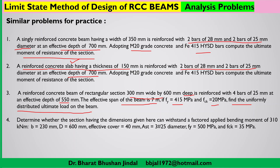The fourth practice problem is different: you have to determine whether a section with given dimensions can withstand a specified factored applied bending moment. Width, overall depth, effective cover, three bars of 25 mm dia, yield strength of steel, and grade of concrete are all given. First work out the moment of resistance of the section based on these dimensions, then compare it with the applied factored bending moment.